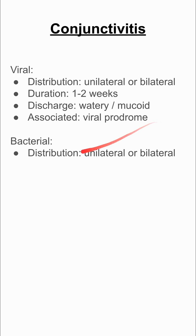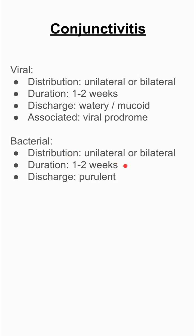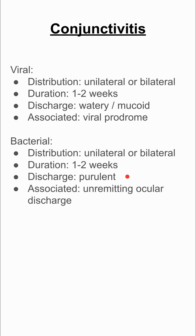In bacterial conjunctivitis, the distribution can again be unilateral or bilateral. The duration is about the same, so no big differences there. The first big difference is that the discharge is much more purulent — instead of being watery, it's much more pus-like, and there's oftentimes a lot of pus coming out of the eyes even as you keep wiping them. It's typically associated with unremitting ocular discharge that keeps coming back.